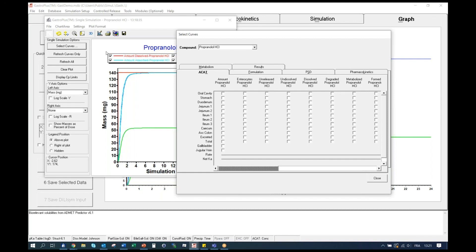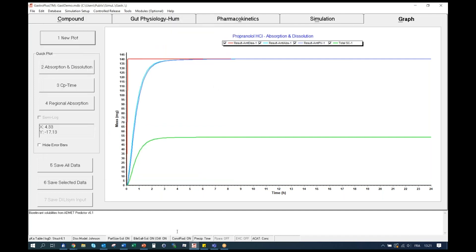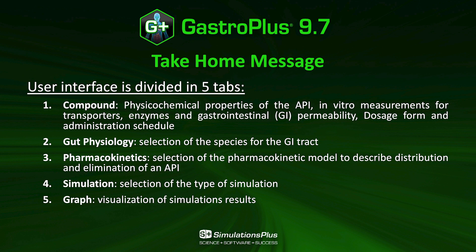This new plot capability will be used in future videos to look at specific tissues or specific administrations. To conclude this video, the take-home messages are that the GastroPlus user interface is divided into five tabs. First, the compound tab, which includes the physicochemical properties of the API, in vitro measurements for transporters, enzymes, and gastrointestinal permeability, as well as dosage form and the administration schedule. The second tab, the gut physiology tab, is where you will select the species and the GI tract state, whether fasted or fed. On the pharmacokinetics tab, you will select the model structure to describe distribution and elimination, whether compartmental or a PBPK model. The simulation tab is where you will select the type of simulation and the length of it. And finally, on the graph tab, you will visualize your simulation results.